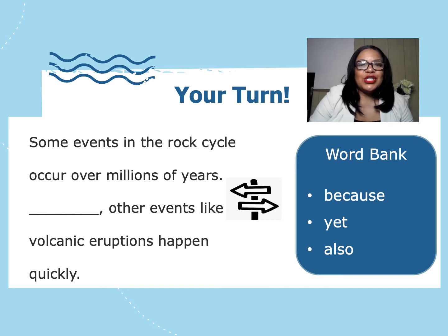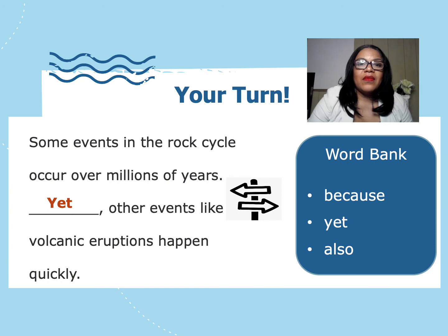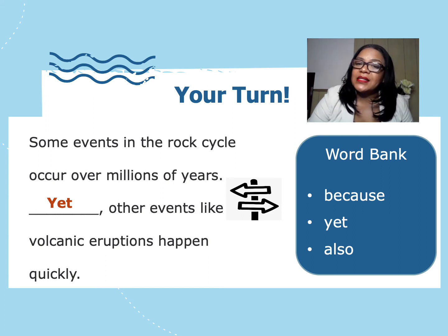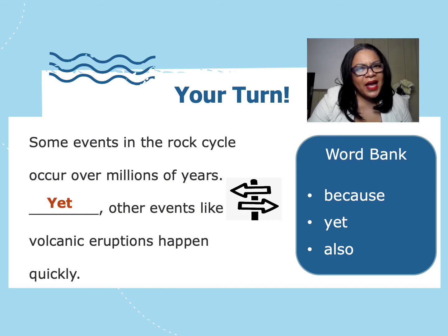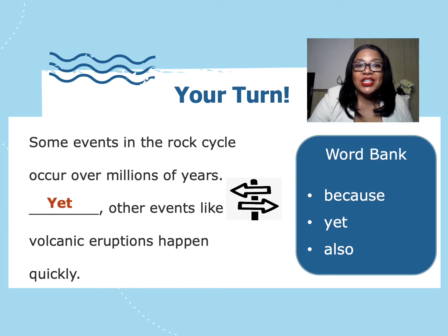Should we check our answers? Let's do it. I picked the word yet as the transition word to connect these two sentences. The first sentence tells how the rock cycle can change the earth very slowly, but the second sentence talks about how it can change the earth very fast. These two sentences are expressing opposing ideas. I selected yet because it is a transition word that expresses differing ideas, like the two ideas about the rock cycle. How did you do? Did you pick yet to connect the sentences? I know you've been working so hard and are ready to start using change of direction words in your writing today.